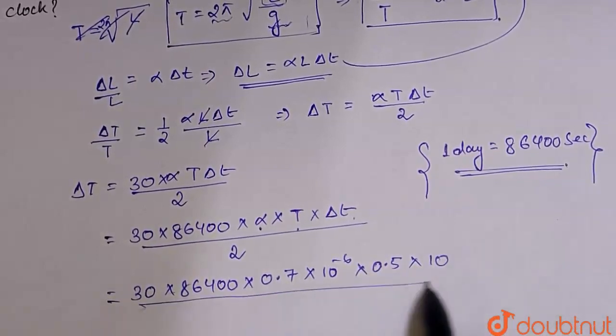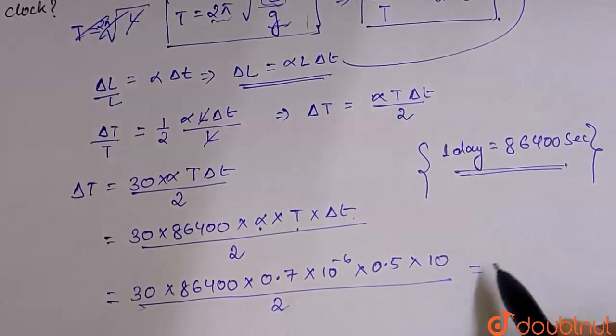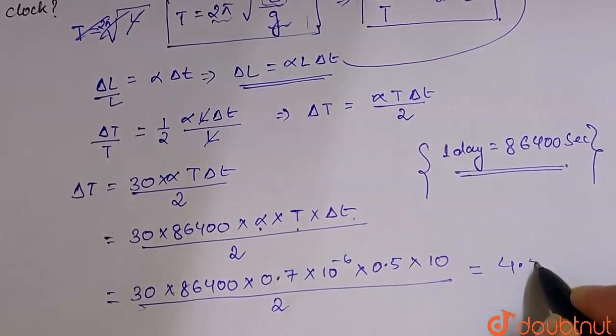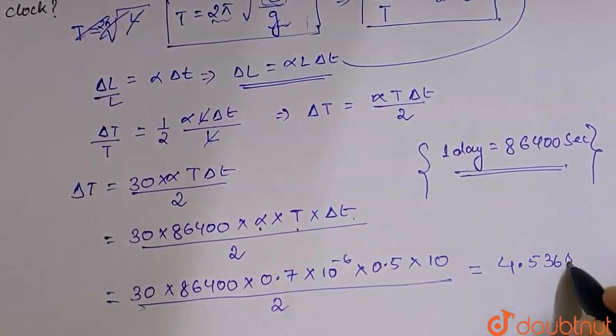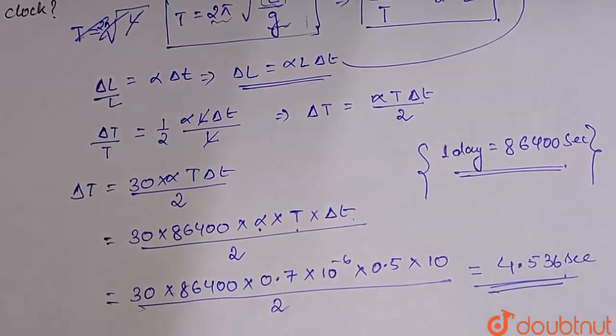Divided by 2. When we calculate this, then change is 4.536 seconds. We have to advance the pendulum clock.